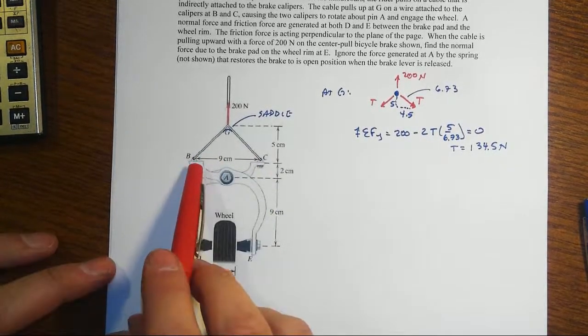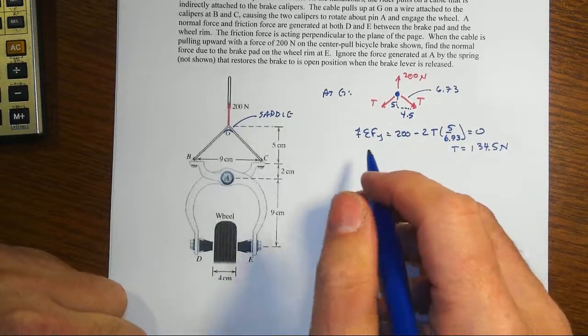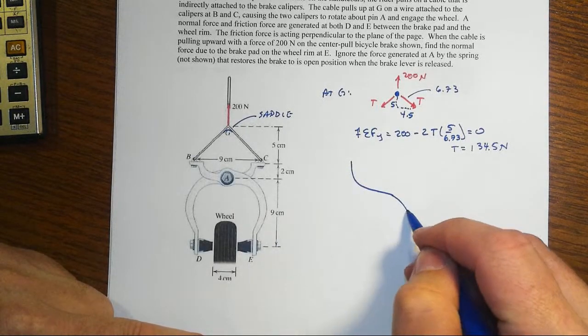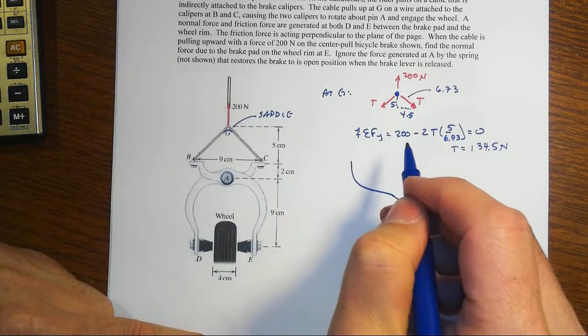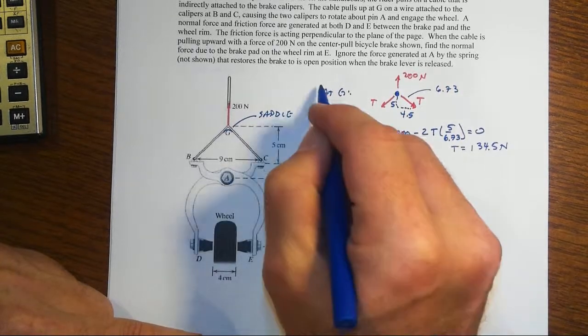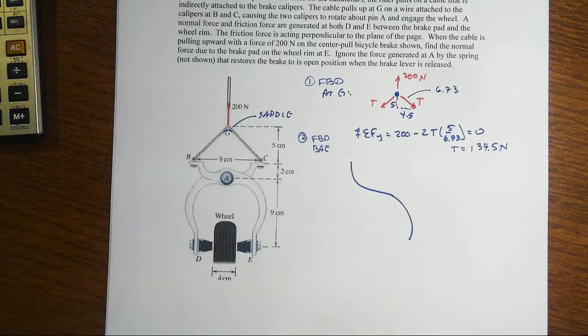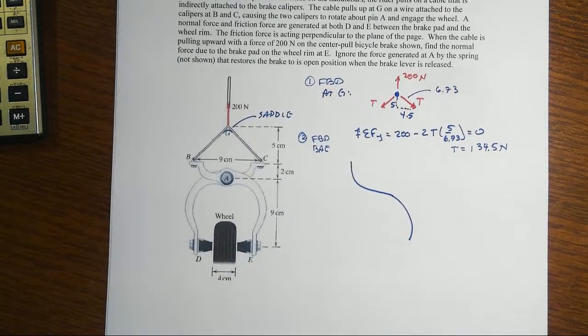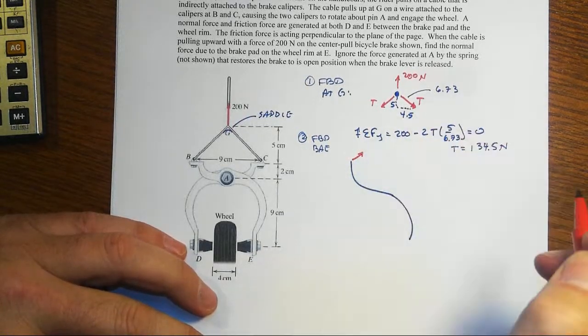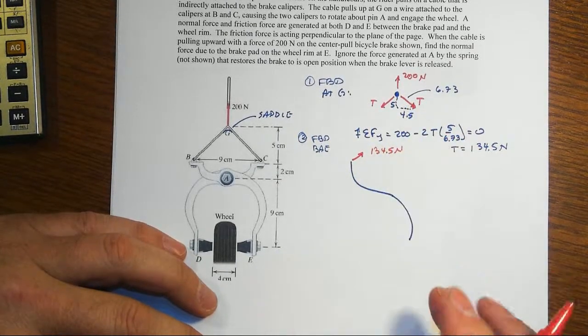Now, let's do a free-body diagram of this little armature. We don't have to get this exactly right to scale. We just have to get this approximate thing going here. This is BAE. And let's be a little bit more precise in our labeling. There we go. That's much better. That'll get you more points on the exam. So there's that piece. Now, at B, we've got this cable at 134.5 newtons acting at the orientation we showed up here.